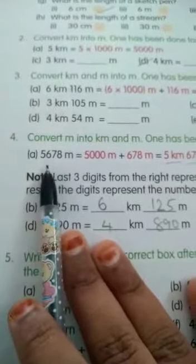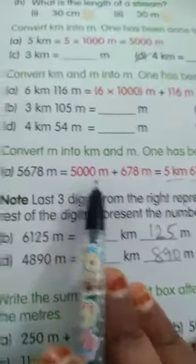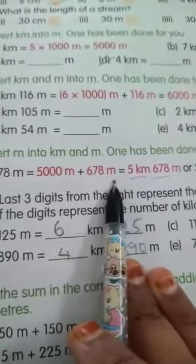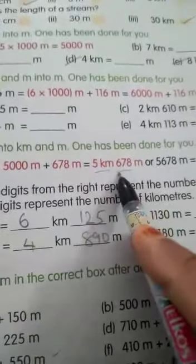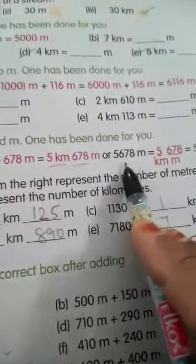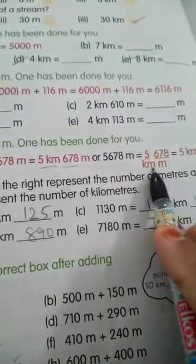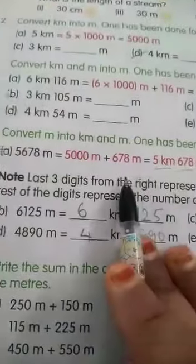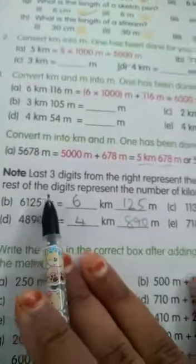Let us move to the fourth bit: convert meter into kilometer and meter. One has been done for you. First question: 5678 meter equals to 5000 meter plus 678 meter, equals to 5 kilometer 678 meter. So here we are separating. Note: 1 kilometer equals to 1000 meter. The last three digits from the right represent the number of meters and the rest of the digits represent the number of kilometers.